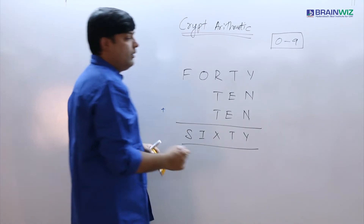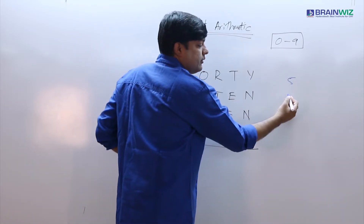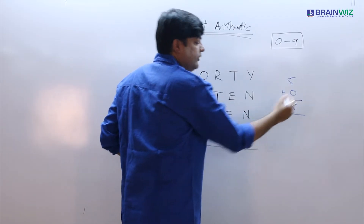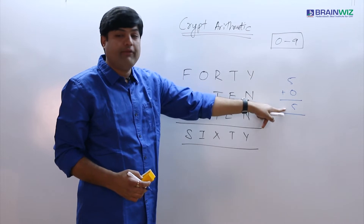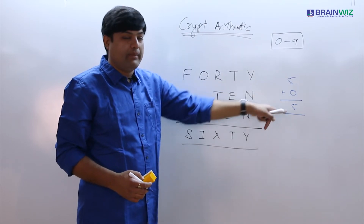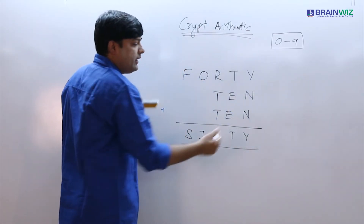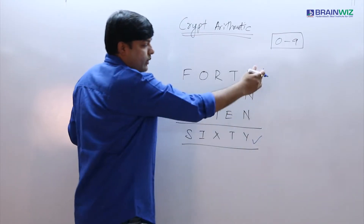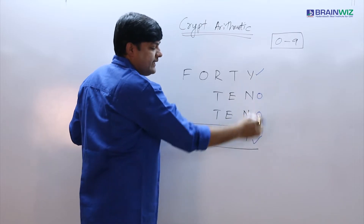Here we have the digit Y and we are adding with Y. When you add 0 to any number you get the same number back. Using this concept, we can understand that here we have Y and here we have Y. In order to get Y again, the value of N must be 0, so that we get the same value.